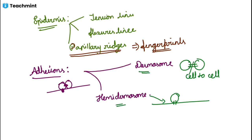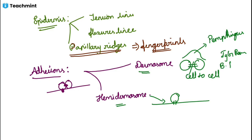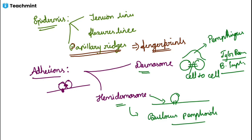Problems in desmosome and hemidesmosome can lead to lack of adherence, and because of this lack of adherence, the cavity will be completely filled with fluid, leading to a particular skin condition called pemphigus. In case of problems in the desmosome, that may lead to IgG pemphigus and bullous pemphigus. If there is any problem in the hemidesmosome, that will lead to bullous pemphigoid. These different types of pemphigus are mainly because of the lack of adhesion in the epidermis.